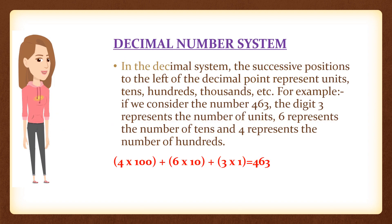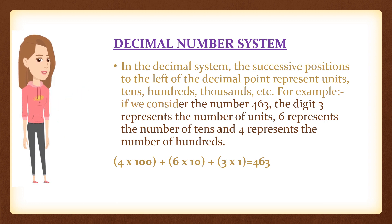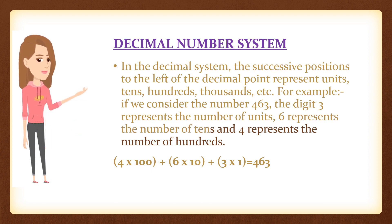In the decimal system, the successive positions to the left of the decimal point represent units, tens, hundreds, thousands, etc. For example, if we consider the number 463, the digit 3 represents the number of units, 6 represents the number of tens and 4 represents the number of hundreds.